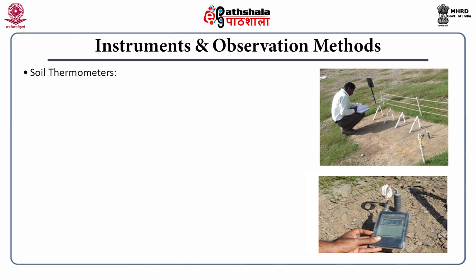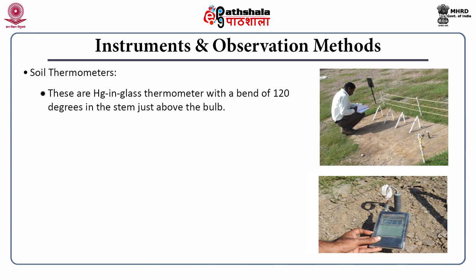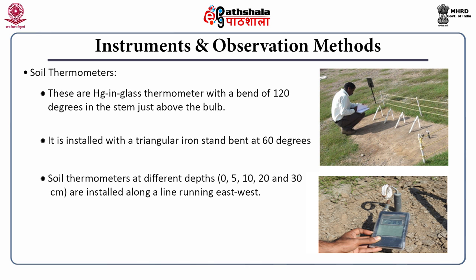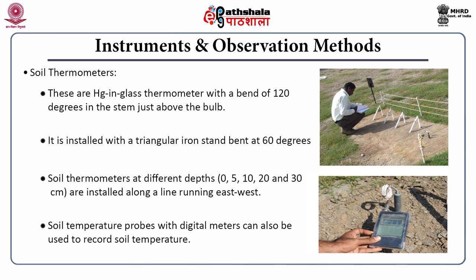Next are soil thermometers. These are mercury glass thermometers with a bend of 120 degrees in the stem just above the bulb, installed with a triangular iron stand bent at 60 degrees. Soil thermometers are placed at different depths: at the surface, then 5 cm, 10 cm, 20 cm, and 30 cm. They are installed along a line running east to west. Measurement is made up to 30 centimeters because beyond that depth, variations are generally less and not typically measured. Soil temperature probes with digital meters are also nowadays used to record soil temperature.